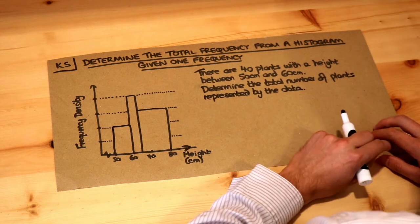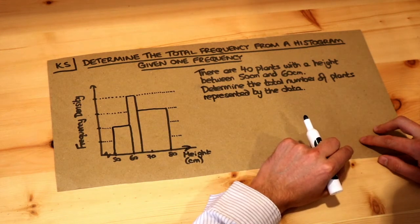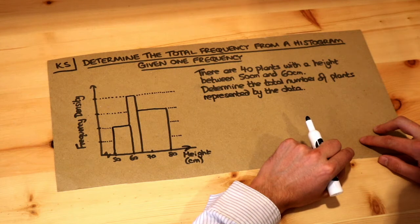Let's look at the question here. There are 40 plants with a height between 50 and 60 centimetres. Determine the total number of plants represented by the data.